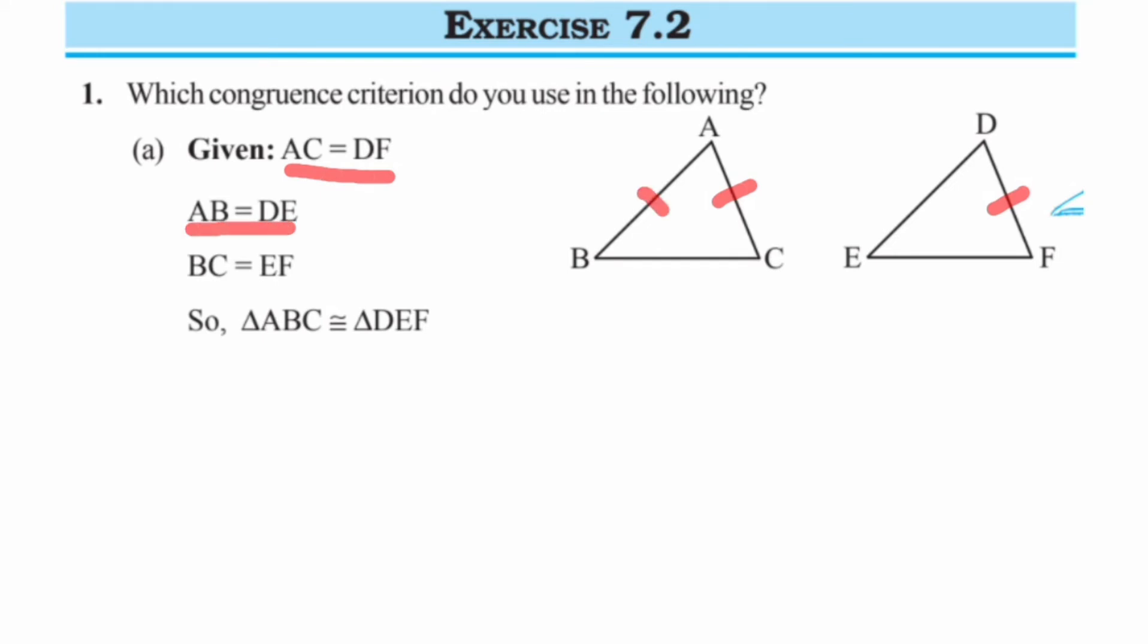AB is equal to DE, and the third one is BC is equal to EF. So BC is this line segment and this one, so these are equal. They are saying that triangle ABC is congruent to triangle DEF.